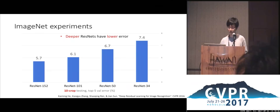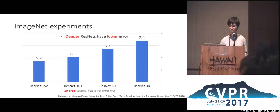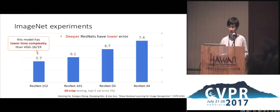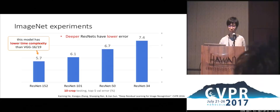Results on ImageNet show ResNets trained with 34, 50, 101, and 150 layers — the deeper the model, the lower the training and validation errors. It is also worth mentioning that even our deepest model with 150 layers has lower time complexity (fewer FLOPs) than the famous VGG models. This is because by having better representation power from going deeper, we can use a smaller number of channels, greatly reducing complexity.